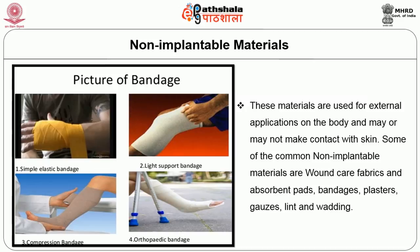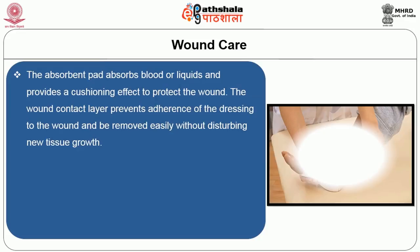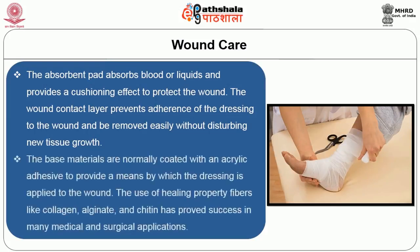Non-implantable materials are used for external application on the body and may or may not make contact with the skin. Common non-implantable materials include wound care fabrics, absorbent pads, bandages, plasters, gauze, lint, and wrappings. The function of wound care fabrics is to provide protection against infection, absorb blood and exudate, promote healing, and apply medication to the wound. Common wound dressings are composite materials consisting of an absorbent layer held between a wound contact layer and a flexible base material. The wound contact layer prevents adhesion of the dressing to the wound and removes easily without disturbing new tissue growth.